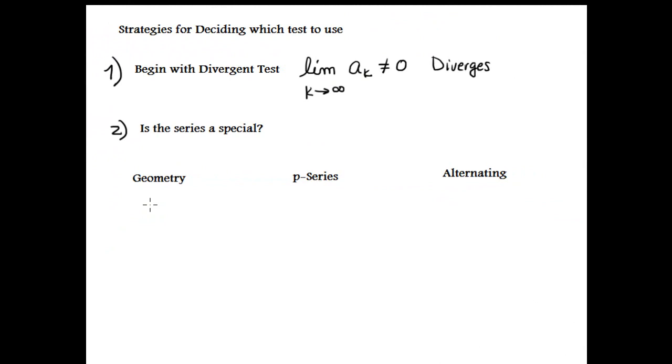The second step is to determine if the series is special or not. We have three kinds of special series. The first is geometric. If it's geometric, you try to find the common ratio. If the absolute value of the common ratio is less than one, the series converges.